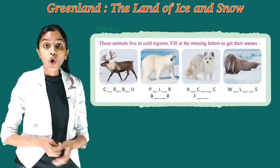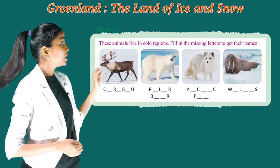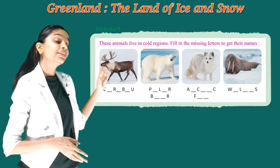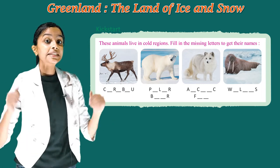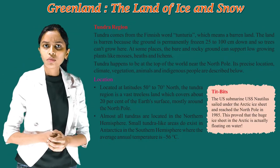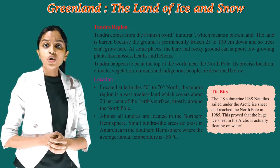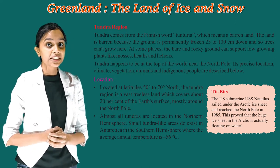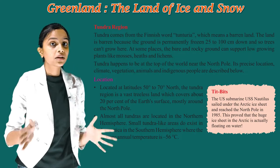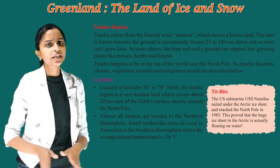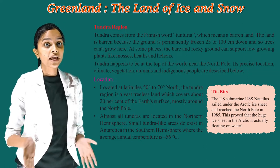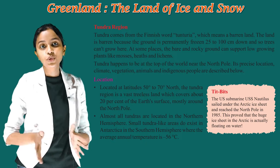These animals live in cold regions. Fill in the missing letters to get their names. So let's start with the Tundra region. Tundra comes from the Finnish word Tunturia, which means a barren land. The land is barren because the ground is permanently frozen 25 to 100 cm down, and so trees can't grow here.